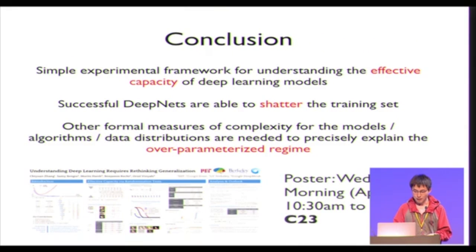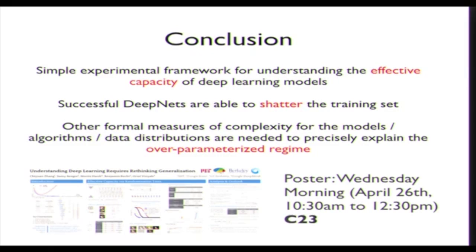To conclude: we introduced a simple experimental framework that measures the effective capacity of deep neural networks, and we found that many successful deep nets can shatter the whole training set. We propose that in order to fully understand generalization behavior in this regime, one needs a formal measure of complexity that takes into consideration the model, the algorithm, and the task or data distribution — such as the margin framework. If you have large margin in the data distribution at hand, you might be able to generalize better. Our poster is on Wednesday morning; please come if you have other questions. Thank you.